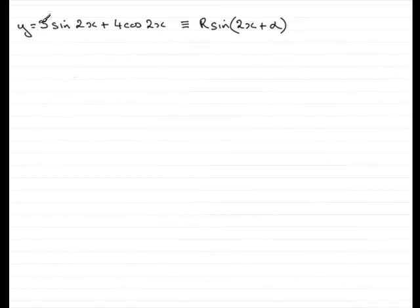In this part of the question, we've got to express y equals 3 sine 2x plus 4 cos 2x in this particular format: r sine 2x plus alpha. So the question is, how do we do it?